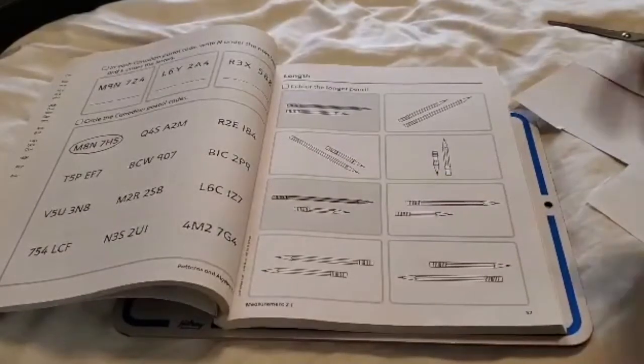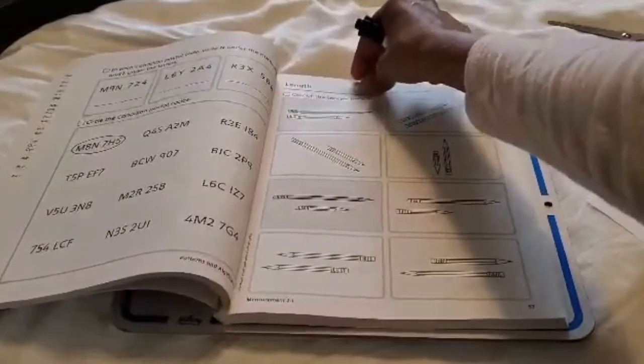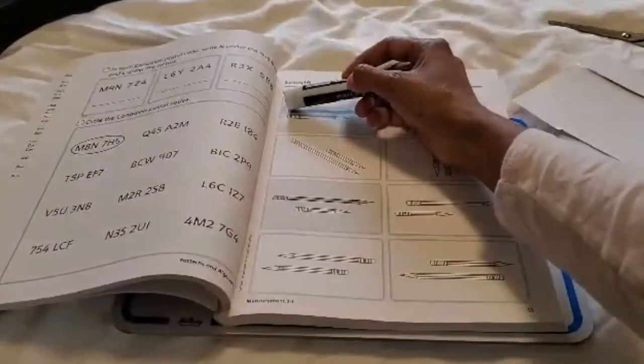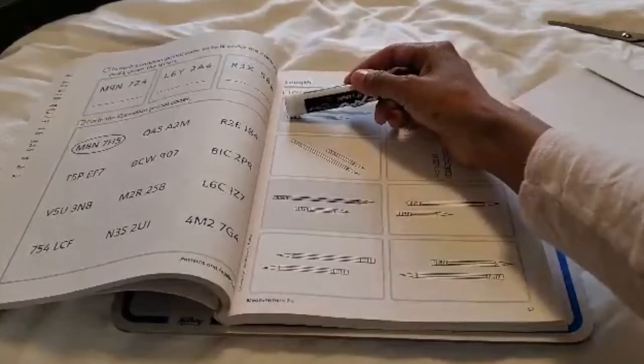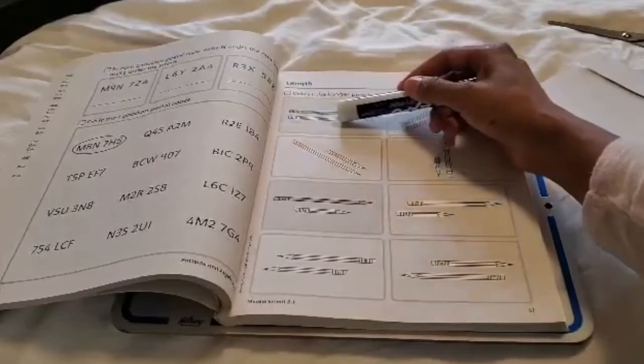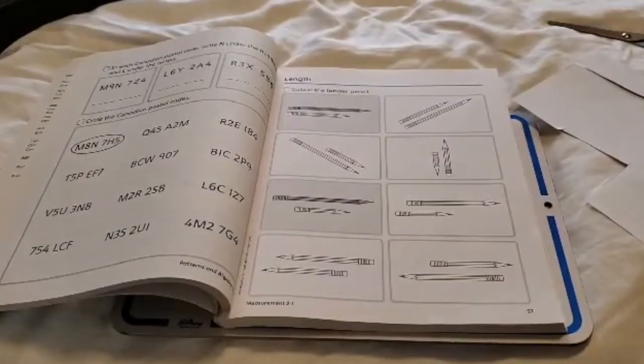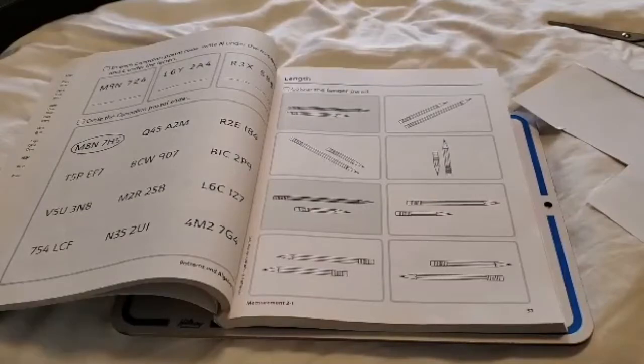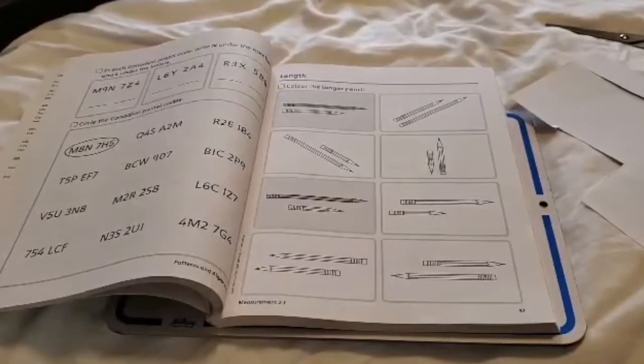You need to color the longer pencil. So you need to measure from one end, go all the way across, and then check out the next pencil. Start at one end and go all the way across, and tell me which of those pencils is longer. If you're having a hard time figuring out which of the pencils is longer, I have a trick that you can use.